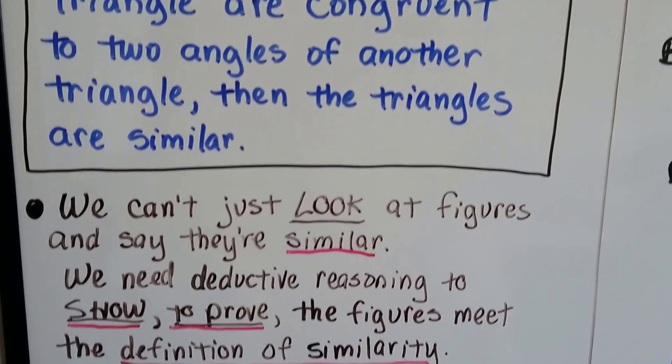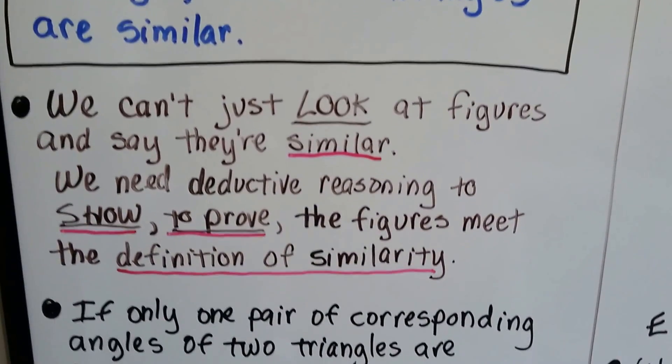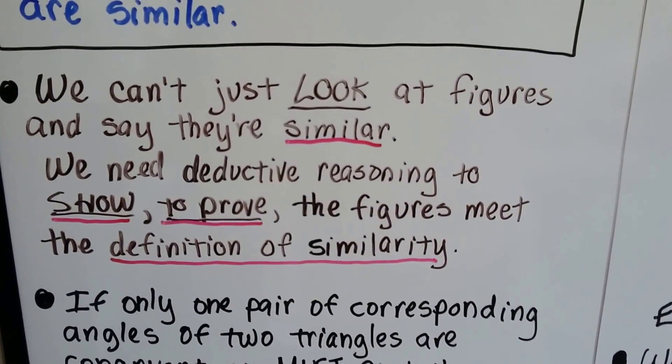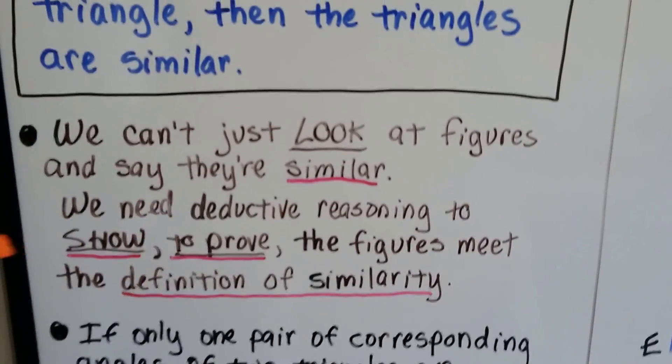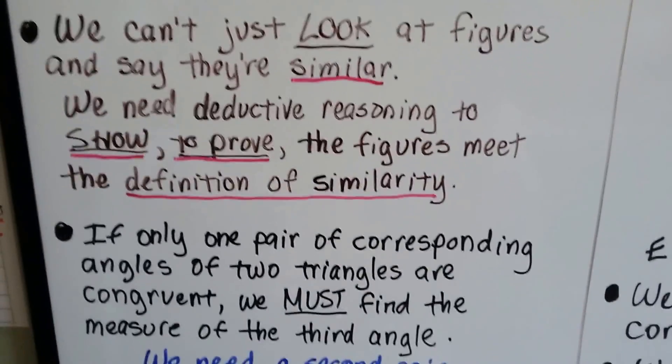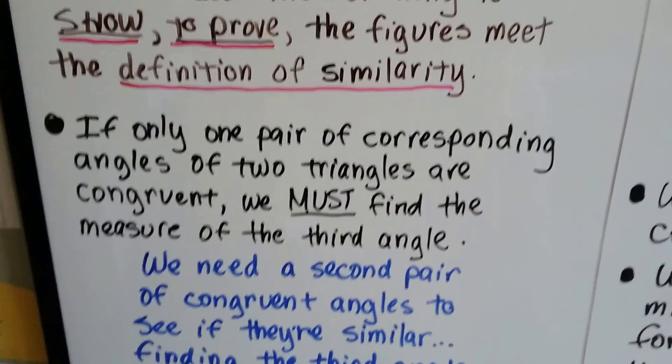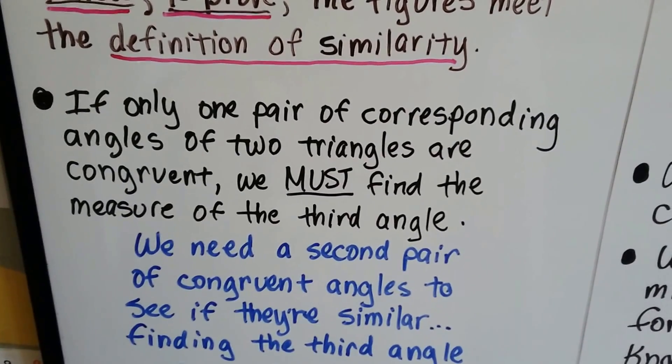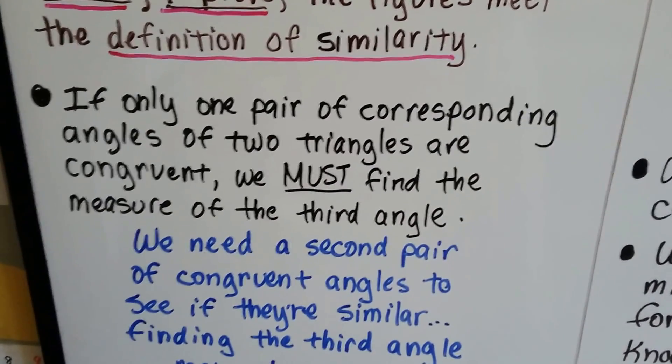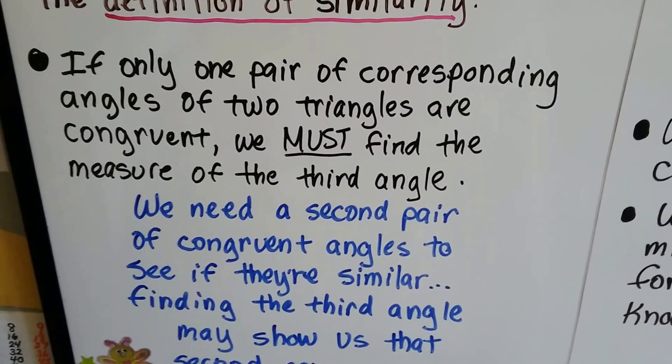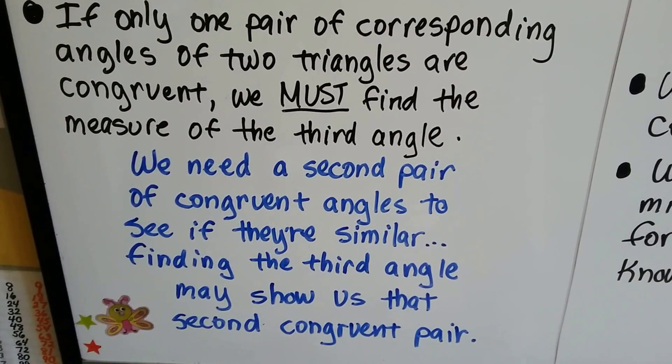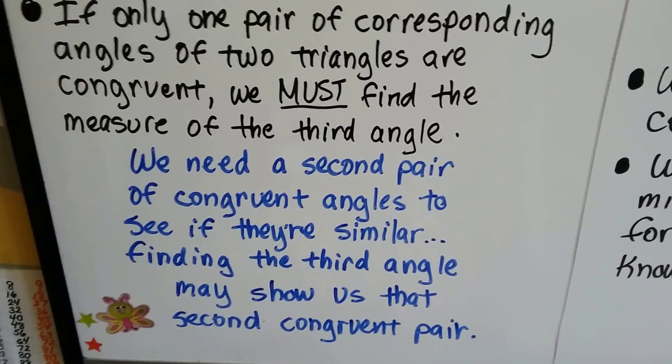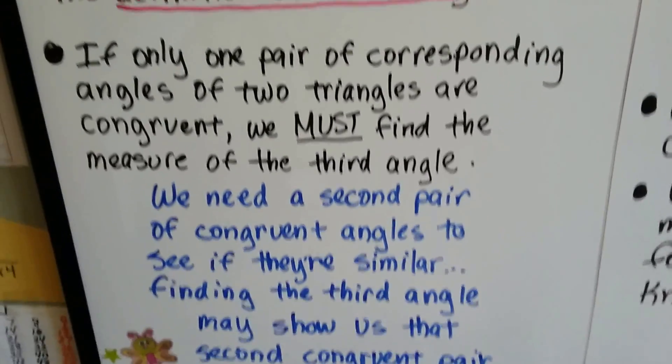We can't just look at figures and say they're similar. We need deductive reasoning to show, to prove the figures meet the definition of similarity. If only one pair of corresponding angles of two triangles are congruent, we must find the measure of the third angle. We need a second pair of congruent angles to see if they're similar. Finding that third angle may show us the second congruent pair.